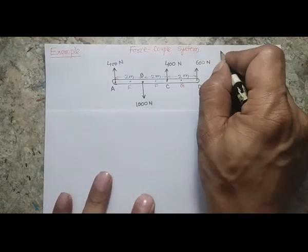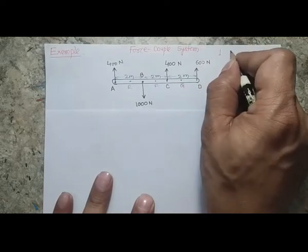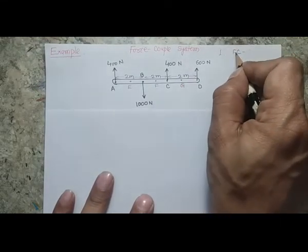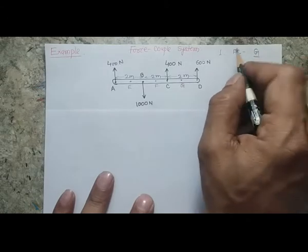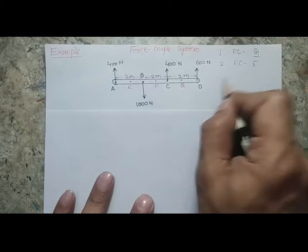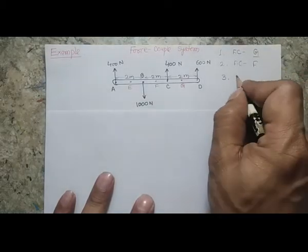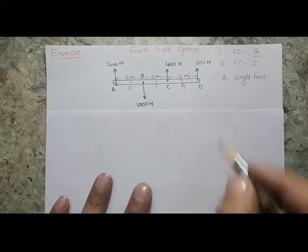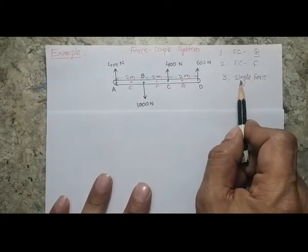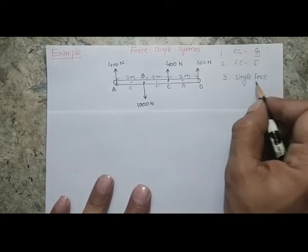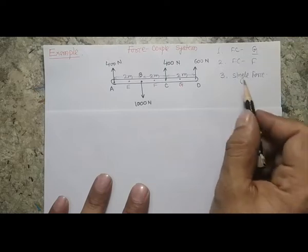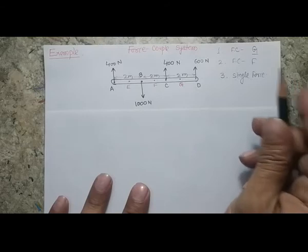I'm going to solve three different cases. First, I'll find an equivalent force couple system at point G. Then a force couple system at point F. Finally, we'll find a single resultant force with its position — because as discussed in the previous lecture, you can get the same effect by either applying a single force or a force couple system.